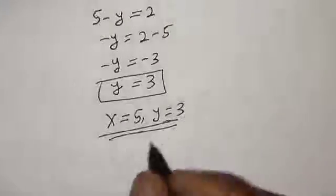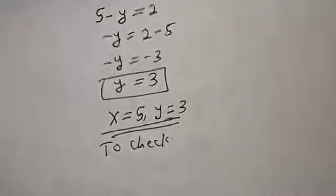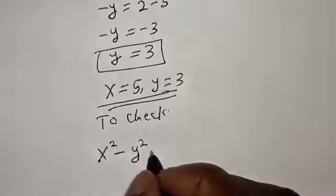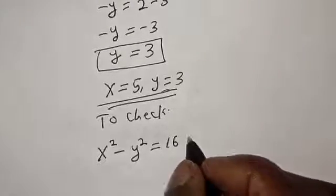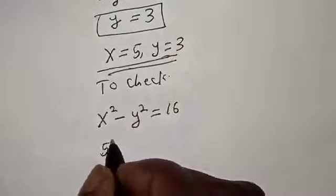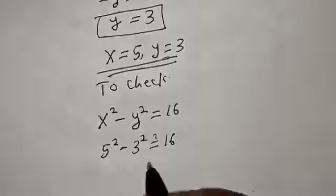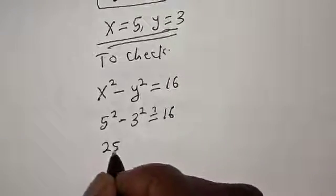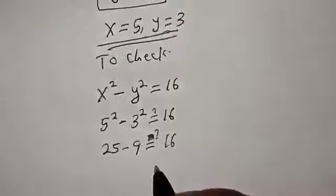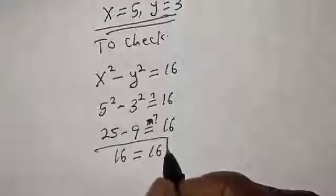This is the final answer. We can check to confirm. We have the given equation x squared minus y squared equal to 16. When x = 5 and y = 3, we have 5 squared minus 3 squared. That is 25 minus 9, which equals 16. We satisfy the given equation.